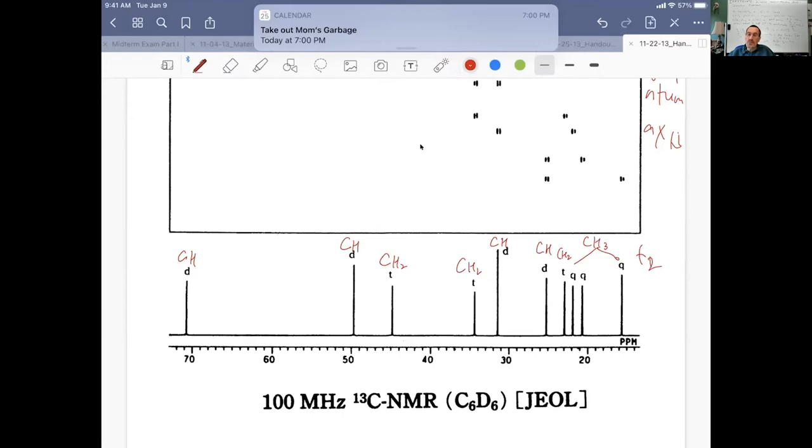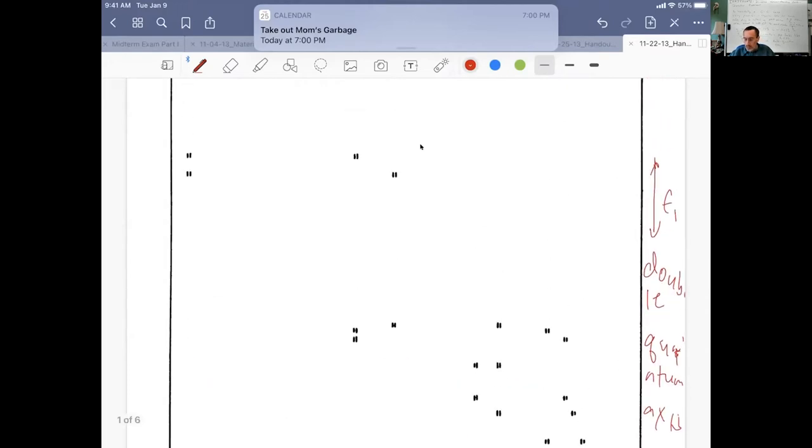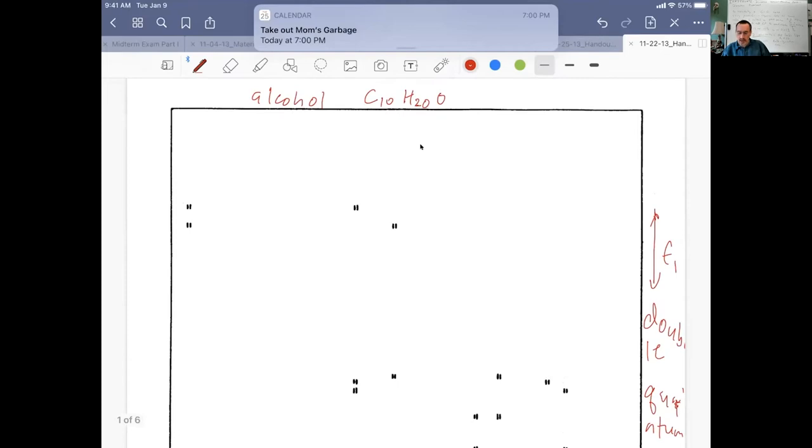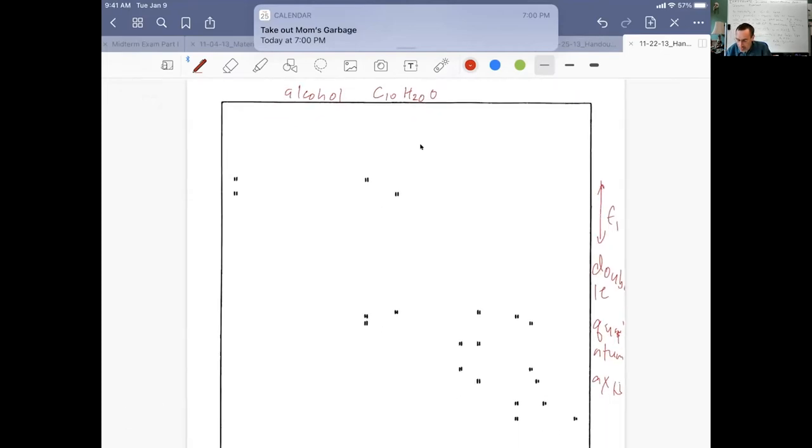The last three ones are all methyl groups here. What I've done for our whole course is say we're always going to deal with numbering our peaks in the carbon dimension. If we had peaks in the proton dimension, we'd letter our peaks. So this is peak one, peak two, peak three, four, five, six, seven, eight, nine, ten.